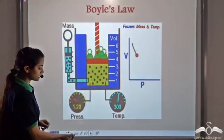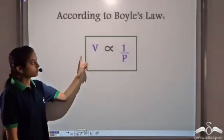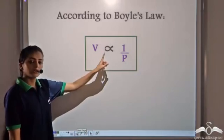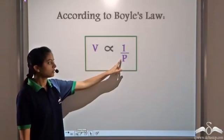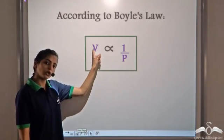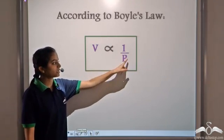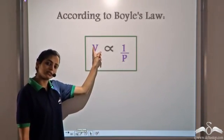So Boyle's law states that the volume is inversely proportional to pressure. As pressure increases, volume decreases, and as pressure decreases, volume increases.